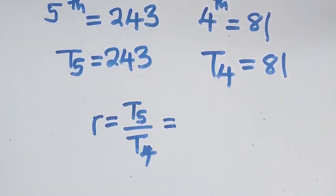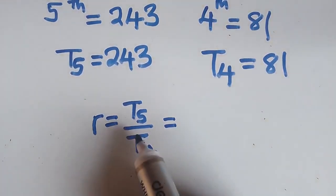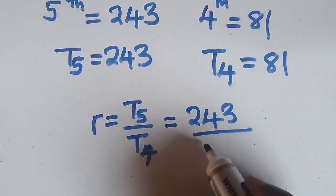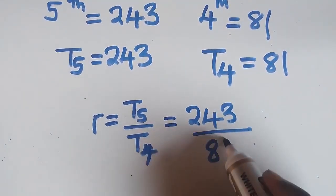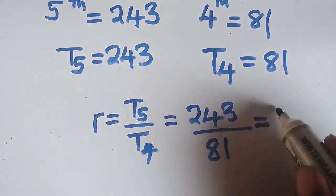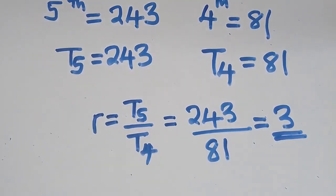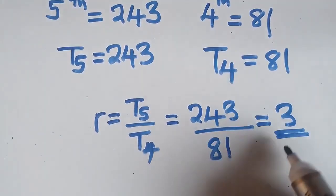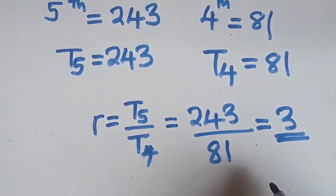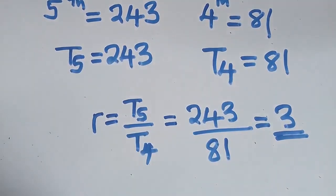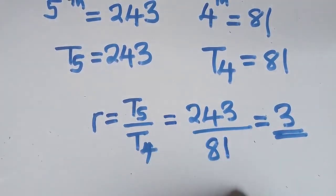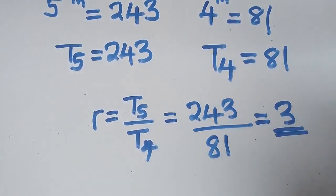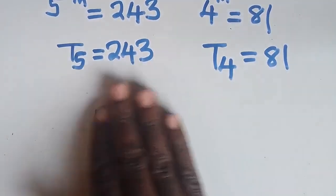T5 is 243 over T4, which is 81. When you divide that, you get 3. So the common ratio is 3. That is how we get to find the common ratio, and the common ratio is 3.